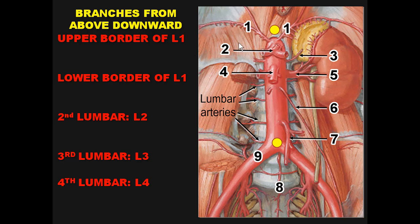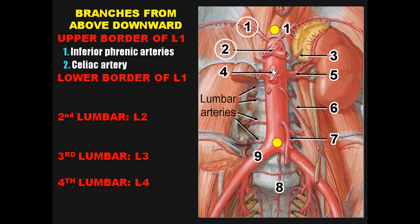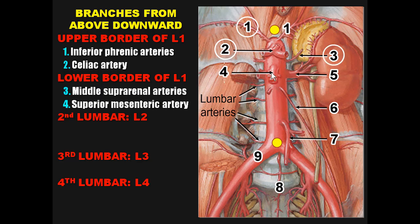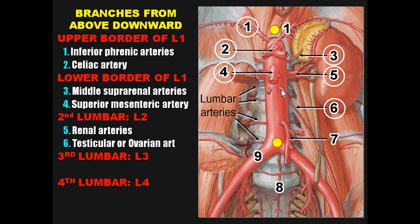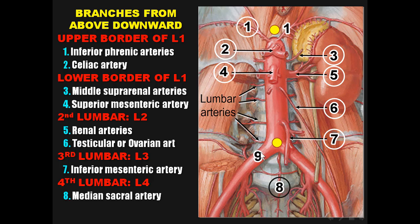Opposite the upper border of L1: inferior phrenic arteries and celiac artery. Opposite the lower border of L1: middle suprarenal and superior mesenteric artery. Opposite L2: renal and gonadal arteries. Opposite L3: only the inferior mesenteric artery. Opposite L4: median sacral artery and the two common iliac arteries. Remember, we have four lumbar arteries — one opposite each lumbar vertebra — and the fifth lumbar artery arises from the median sacral artery.